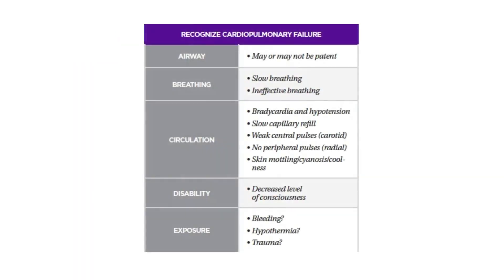Recognizing cardiopulmonary failure can be done by following the ABCDE survey, which checks for airway, breathing, circulation, disability, and exposure. For further details on these factors, refer to Table 22 in your corresponding PALS manual.